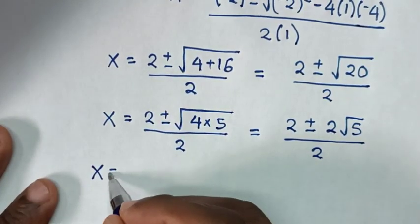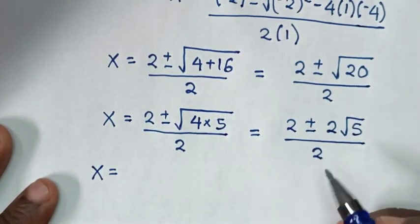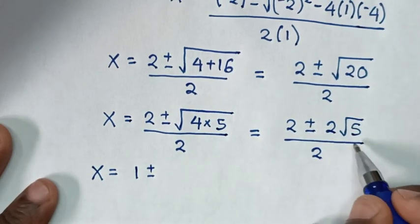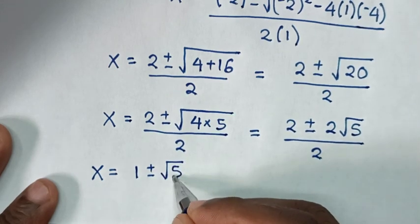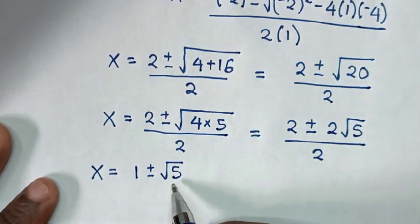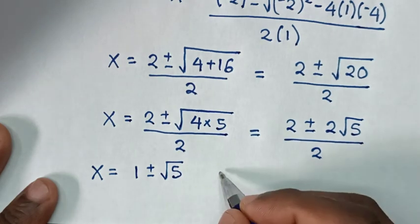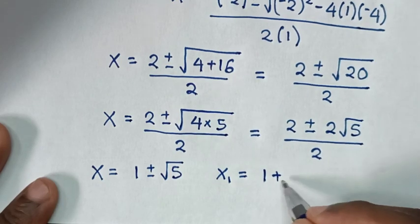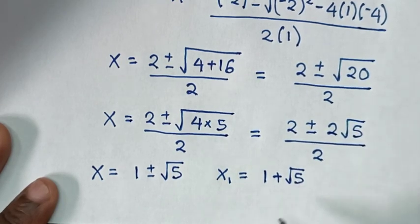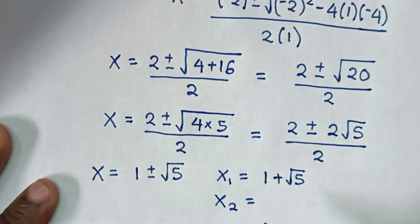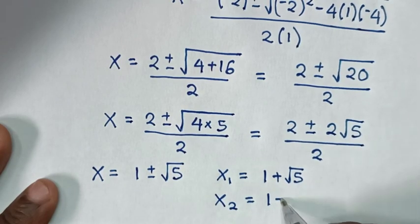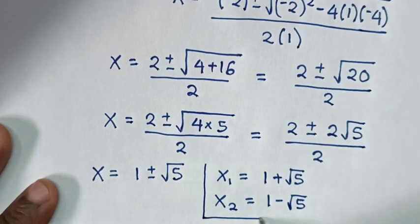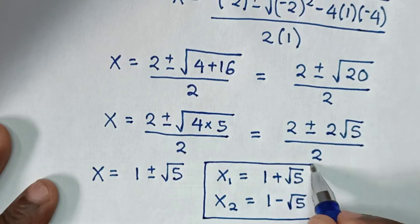Then x is equal to 2 divided by 2 which is 1, plus or minus the 2 and 2 will cancel, so it will be square root of 5. So in here we have two values of x: the first value of x is 1 plus square root of 5, and the second value of x is 1 minus square root of 5. These are all the values of x in this problem.